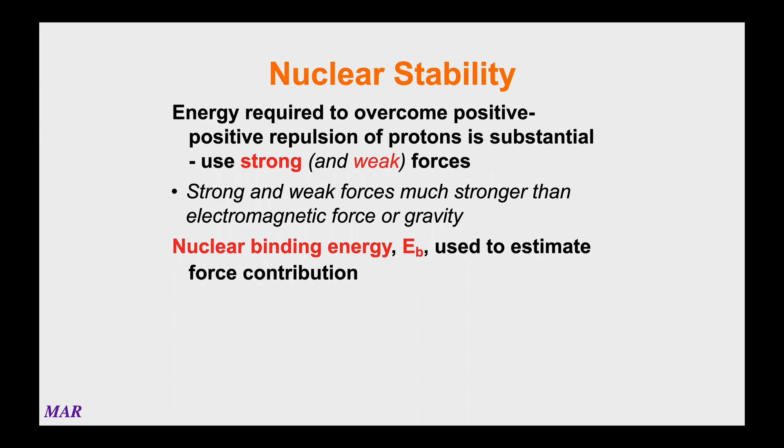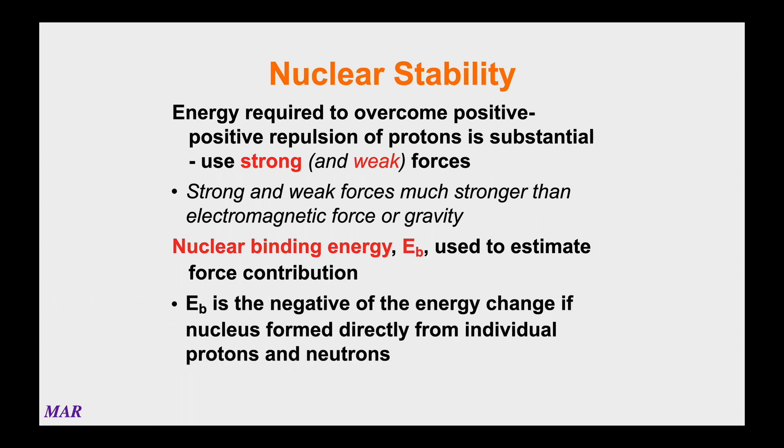That's the kind of calculation we're going to do here, which is really pretty cool. There's some interesting applications of the nuclear binding energy values. What we're going to look at is how to calculate the nuclear binding energy. E_b is the negative of the energy change if the nucleus is formed directly from individual protons and neutrons.